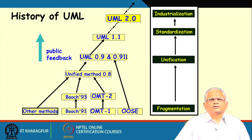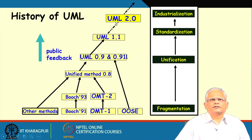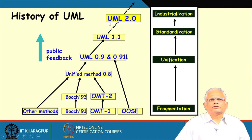UML has been receiving feedback on how to improve and what is lacking for designing specific systems. Based on that, UML has been evolving. One major release is UML 2.0, because embedded systems specifically required different sets of notations for events, signals, and so on, which led to UML 2.0 being brought out.